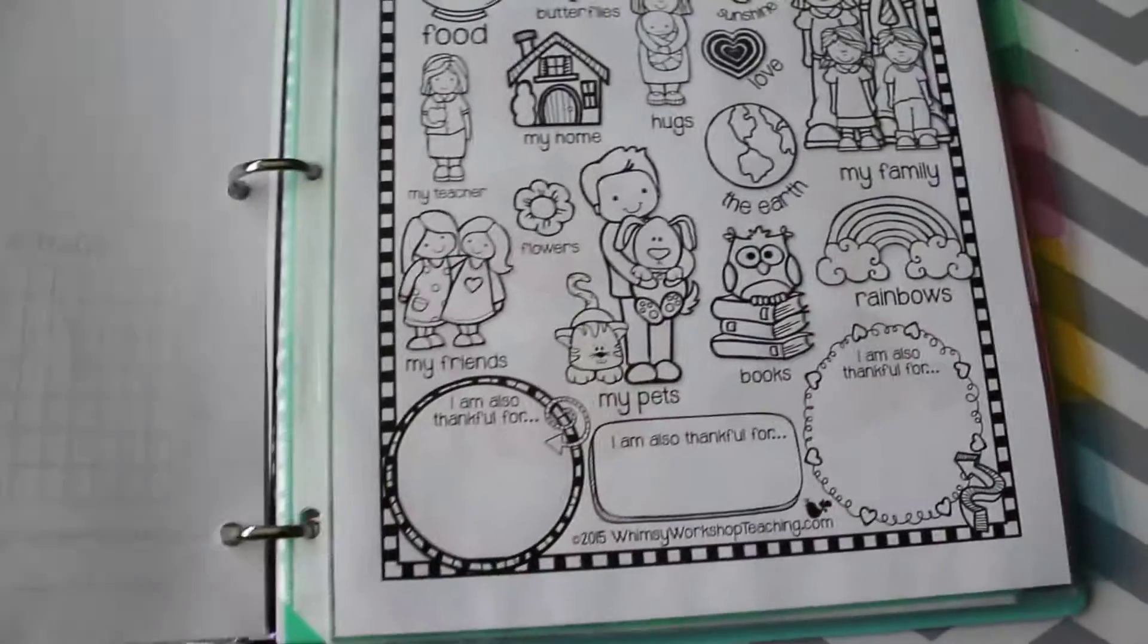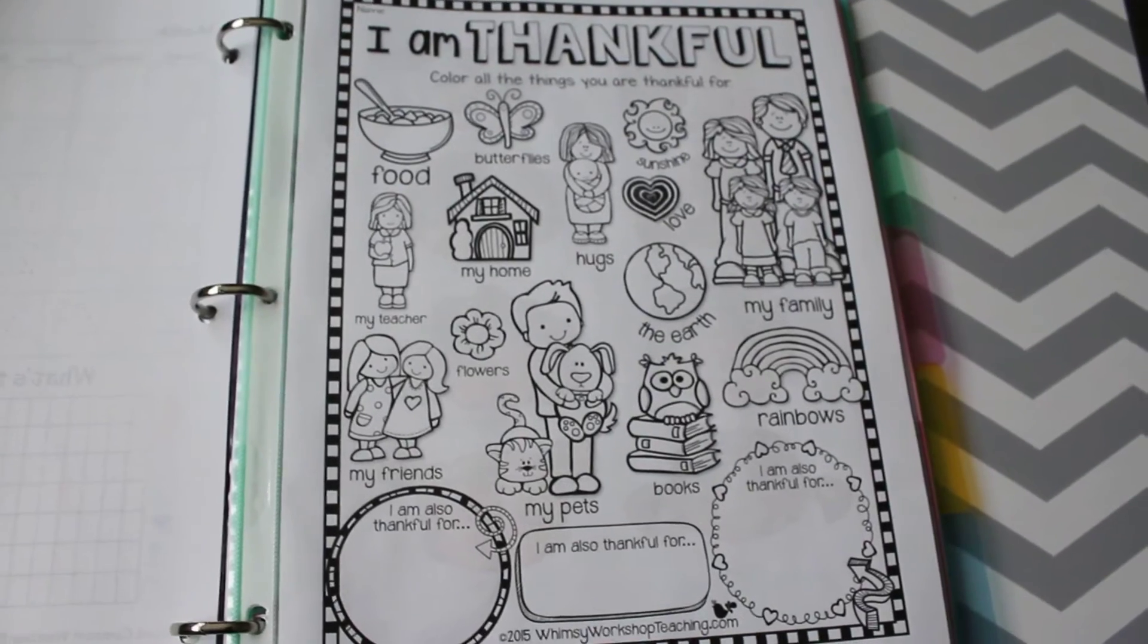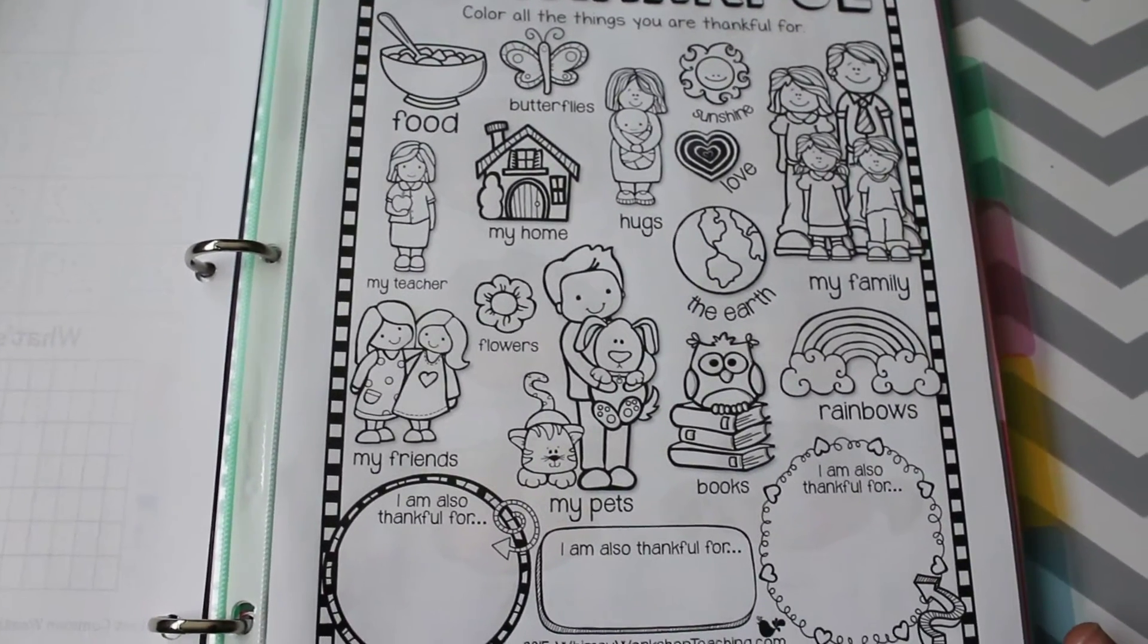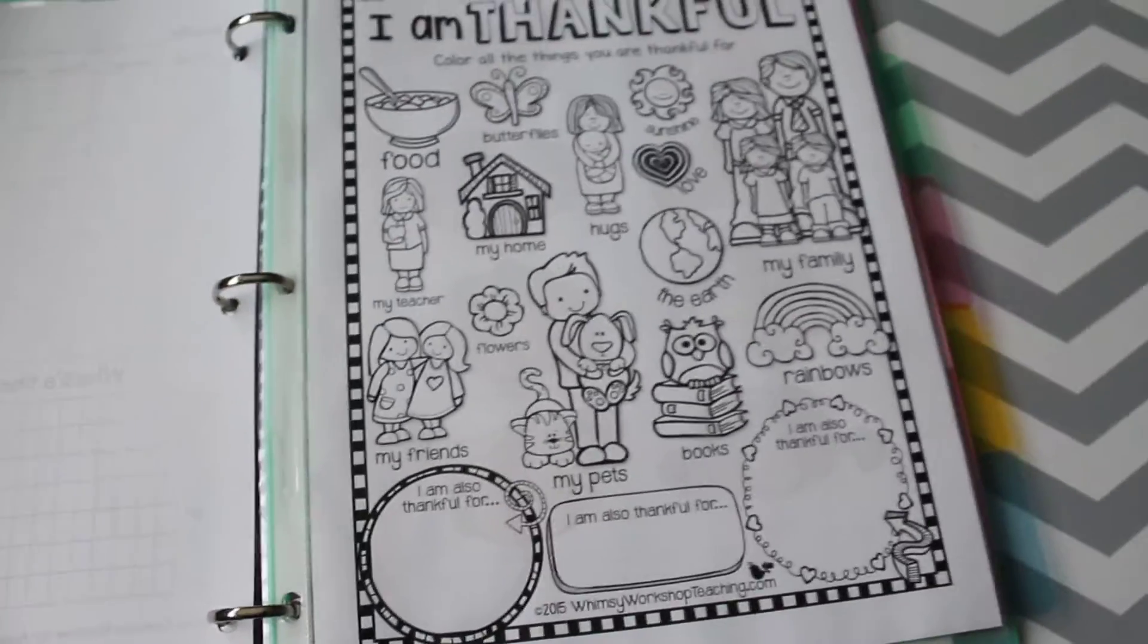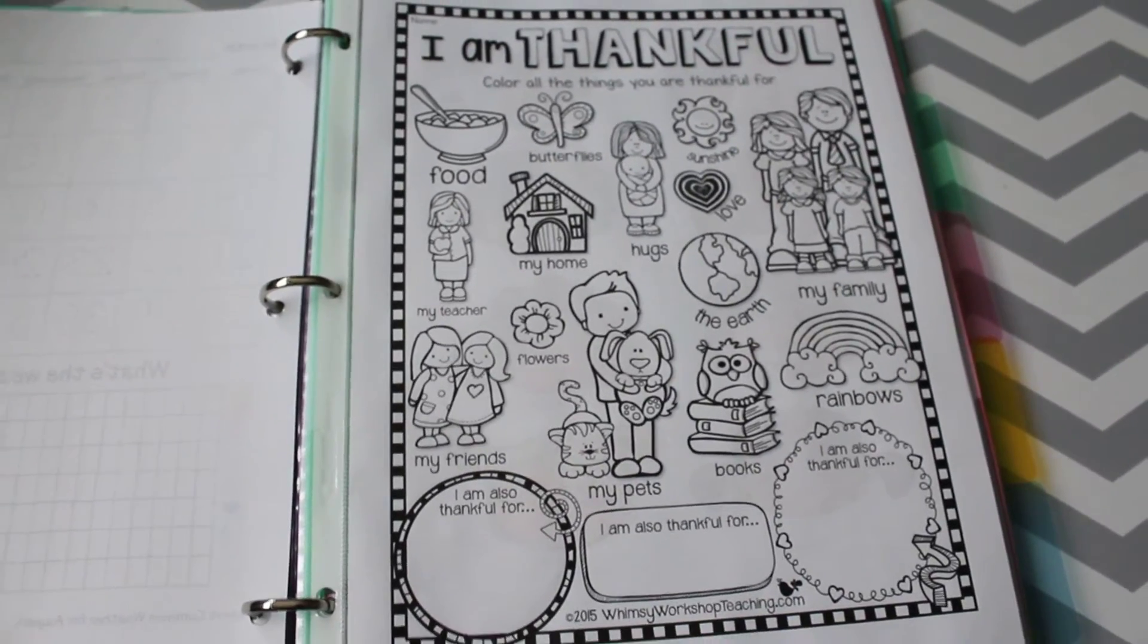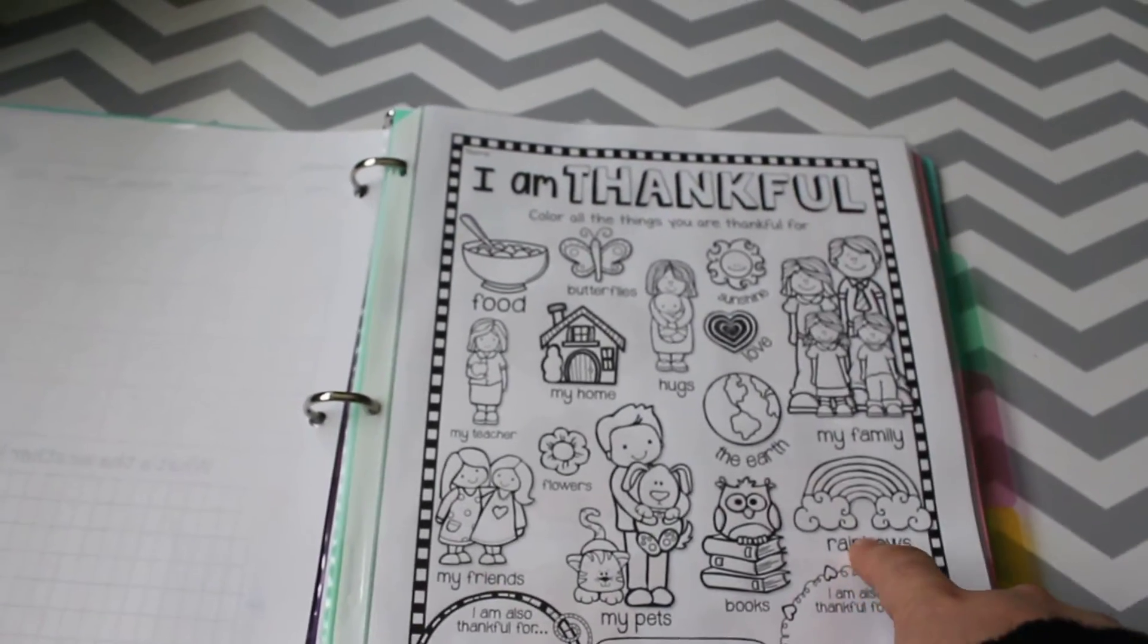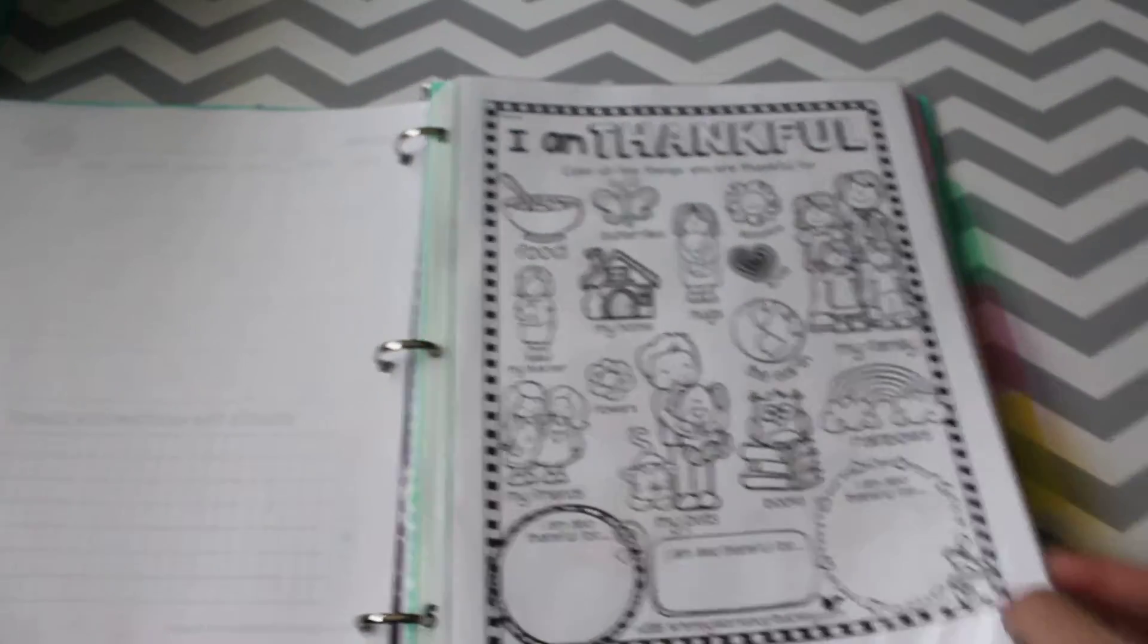The next one is just an I'm thankful for page. I just want them to be focusing on what's good in your life, what are you thankful for. This one's pretty basic since they're so young but they can just color whichever thing they want to pick for the day, and there's some blank ones at the bottom that they can either draw a picture of whatever they're thinking or they can have me help them write it. I may do like a certain amount and then make up your own every day so they're actually having to think about a specific person they're thankful for.